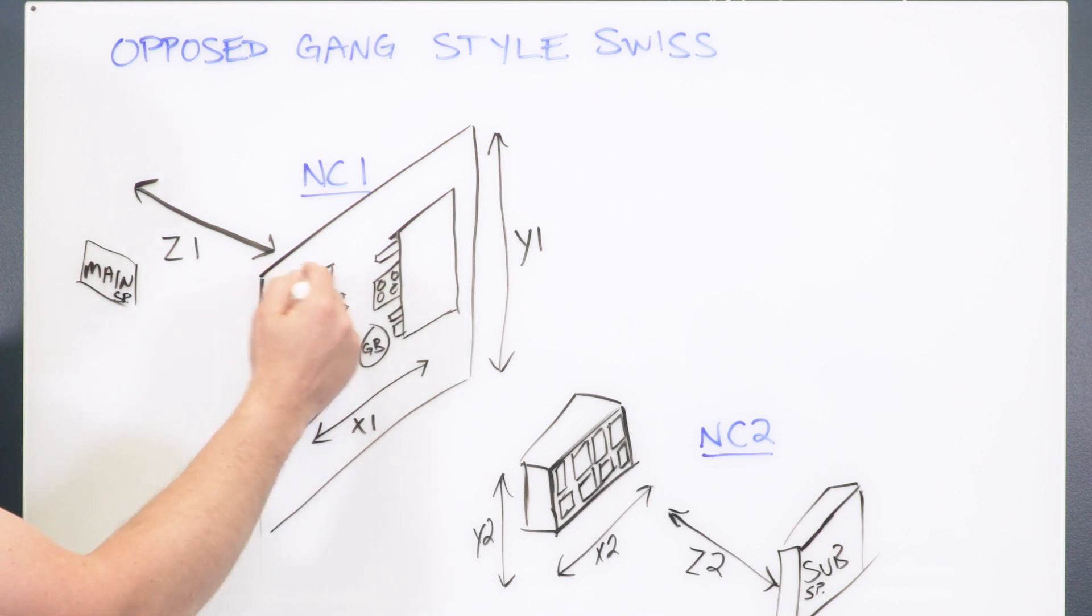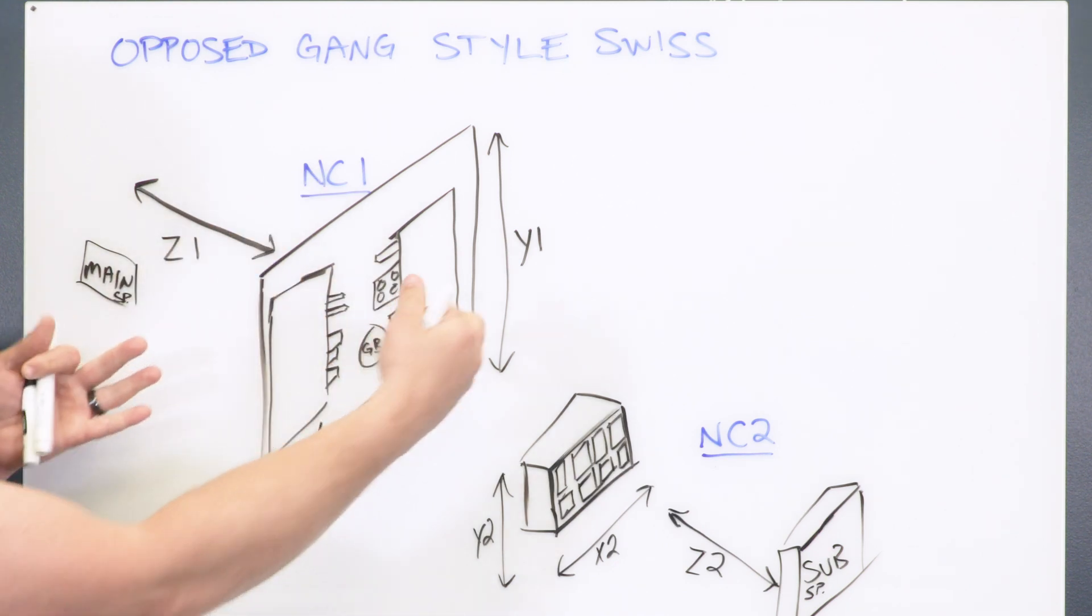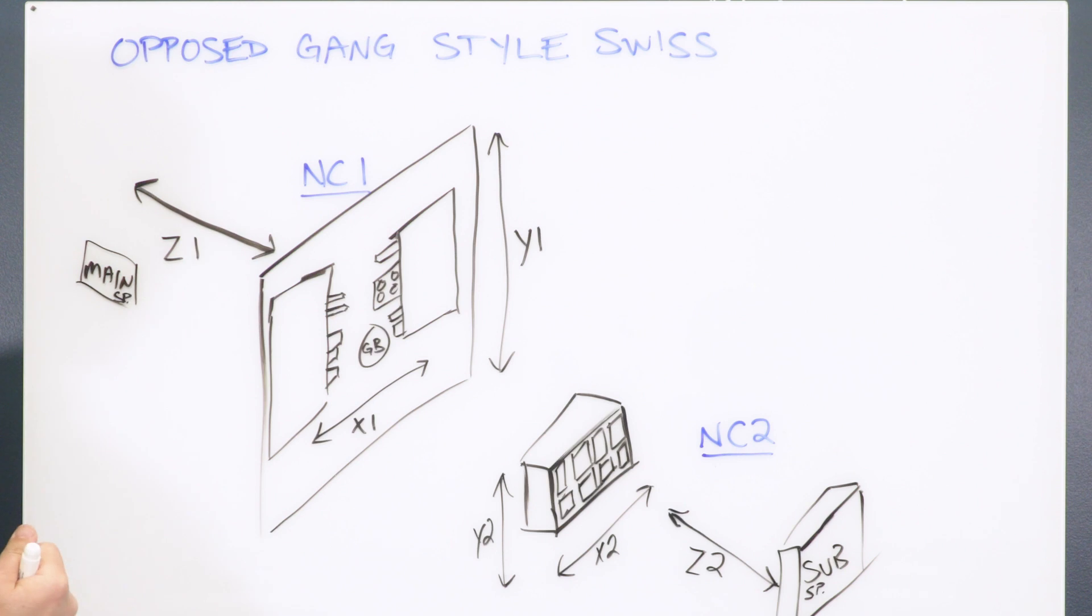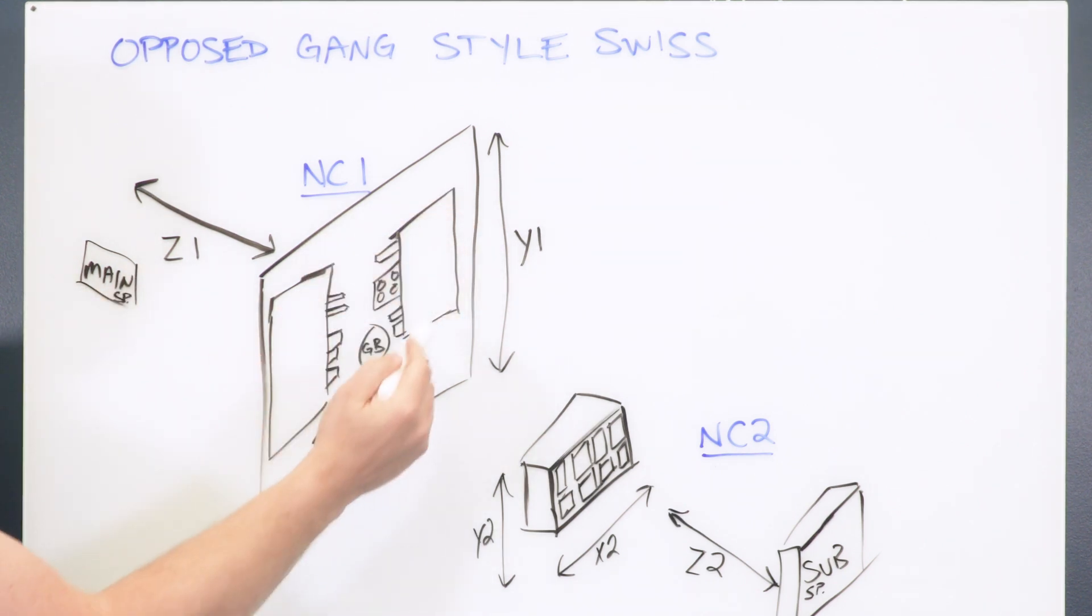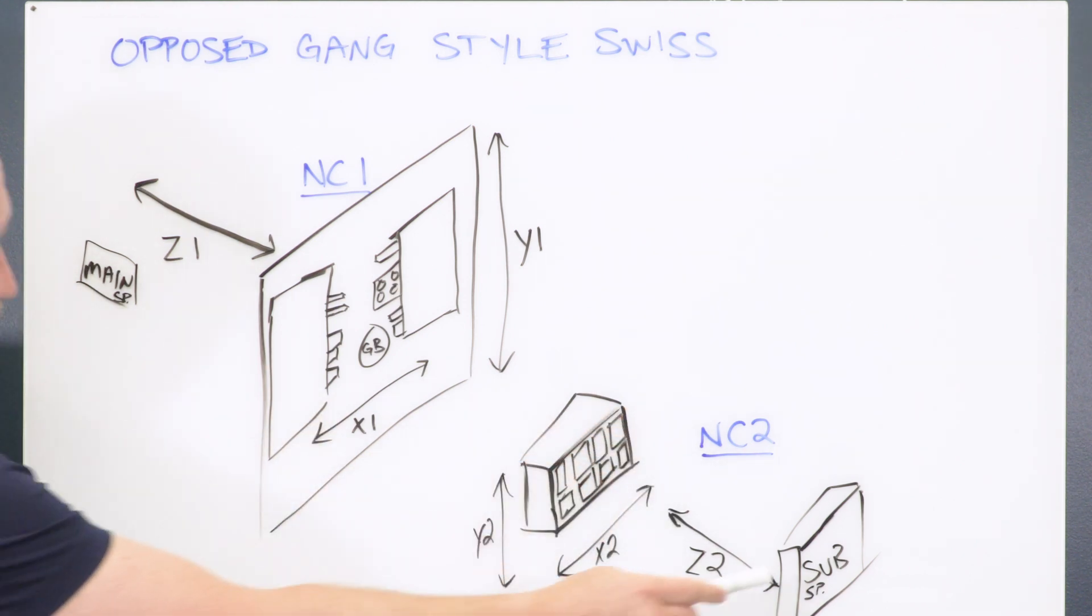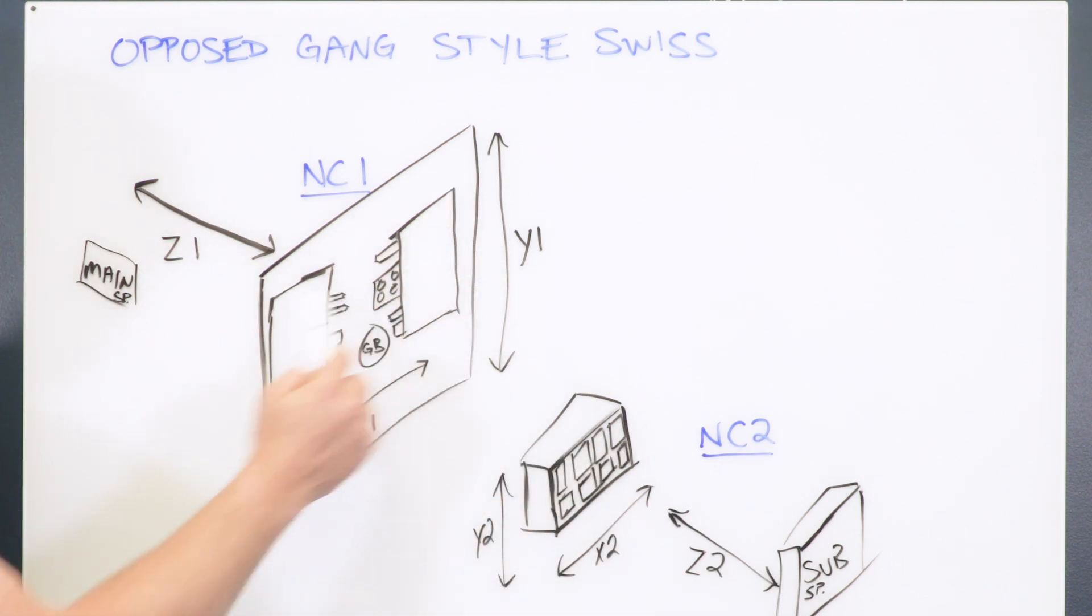This would be your front gang slide on an opposed style machine. This is called opposed because obviously we have two gang slides here and they oppose each other. So front gang slide, rear gang slide, and this would be NC2, the back working block. So you have your main spindle, sub spindle, back working block, and then you have your gang slides here.